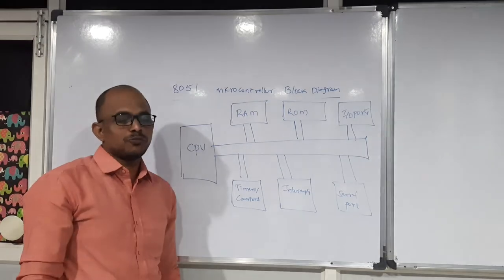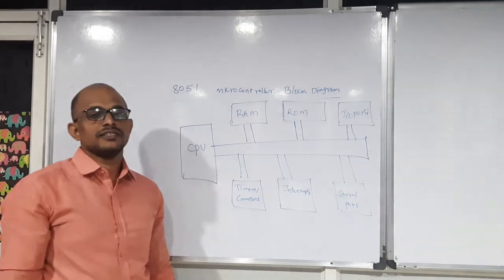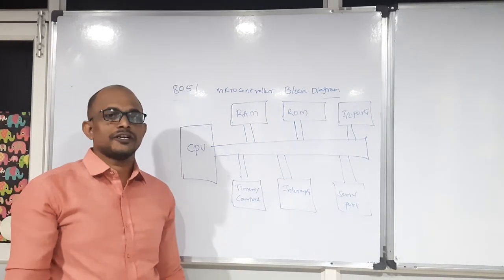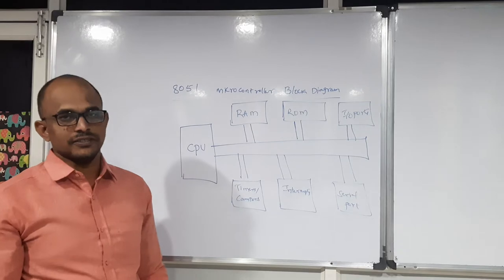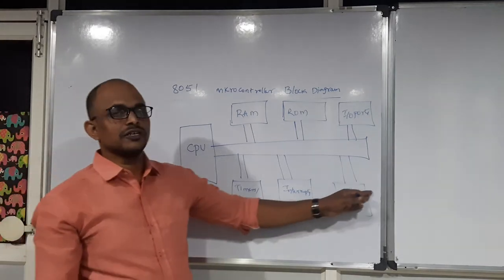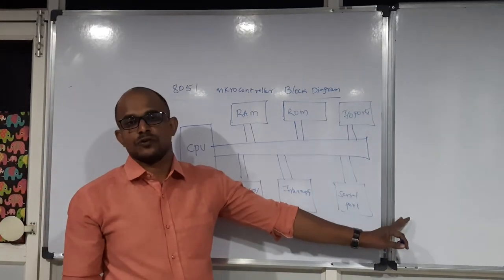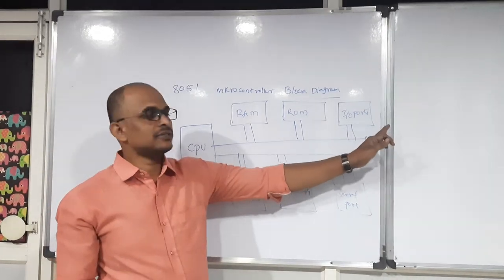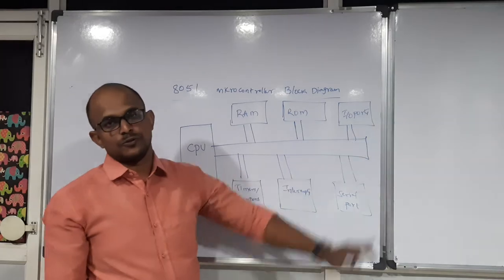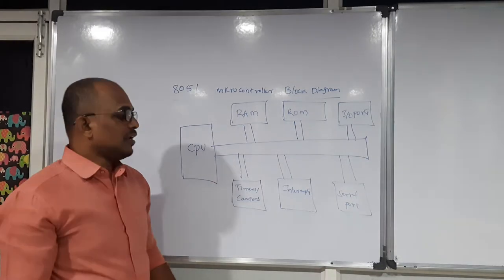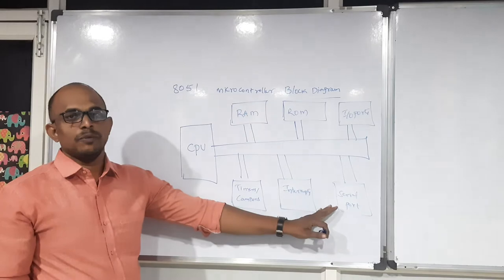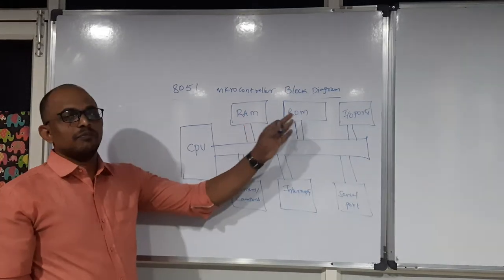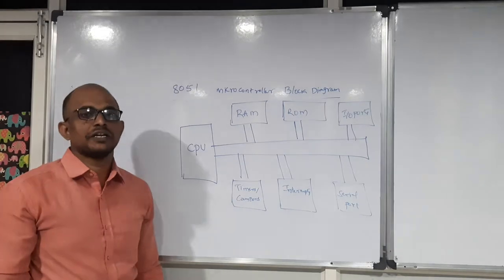You need to understand the importance of each block from microcontrollers, as it makes it easy to use the right feature in a specific application. Suppose you are trying to connect some analog sensors — you need to search for the ADC block from the microcontroller. If you are trying to connect any digital sensors or peripherals, you need to deal with I/O ports. If you are looking for communication-based applications, you need to depend on the serial port, and the memories help us to store data or programs.